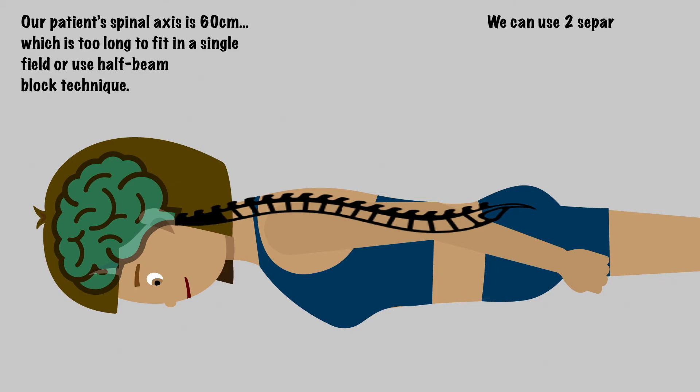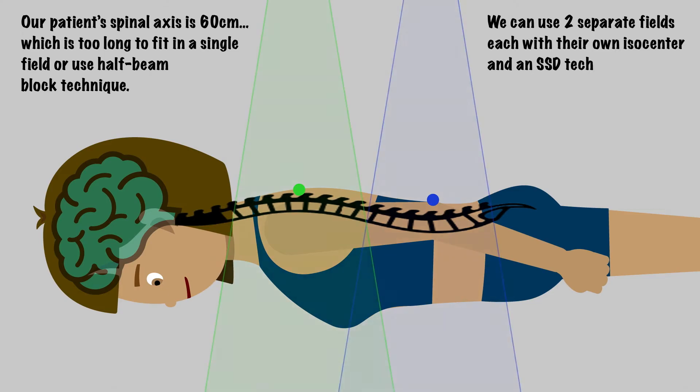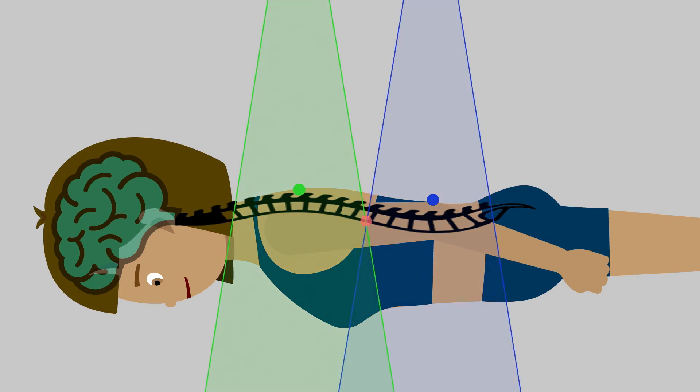Recall that the field size on most linacs is limited to 40 by 40 cm at isocenter. So in this case, we used two separate fields with two different isocenters, signified by blue and green dots here, using an SSD technique. The match point in this case is the anterior aspect of the thecal sac, so we can avoid a hot spot within the cord. So here, the goal is to calculate the gap on the skin.